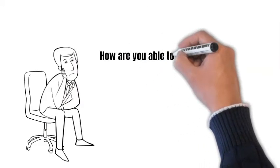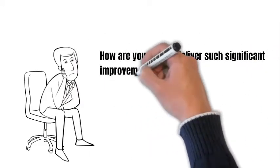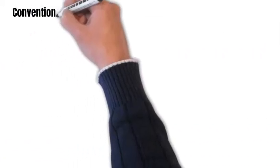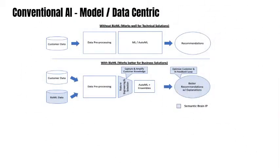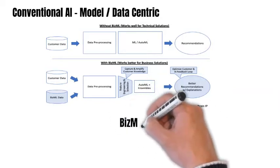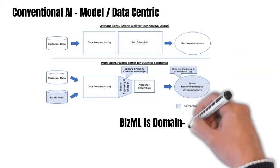How are you able to deliver such significant improvements? Conventional AI is either model or data-centric. Model-centric focuses on AI architecture, while data-centric focuses more on data quality. We at Semantic Brain focus more on domain expertise-centric AI, and we call this framework BizML.